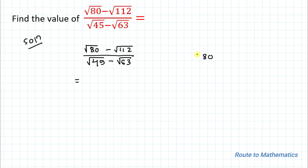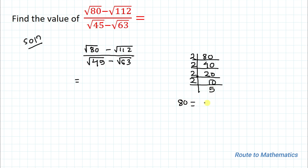For 80, we divide by 2 to get 40, again by 2 to get 20, again by 2 to get 10, and again by 2 to get 5. So the factors of 80 are 2 × 2 × 2 × 2 × 5.